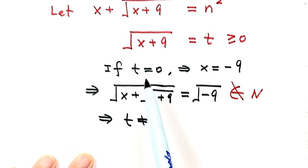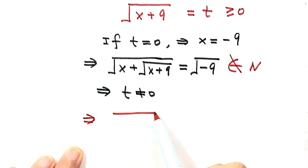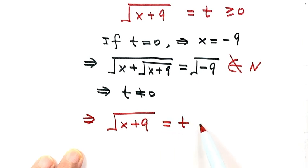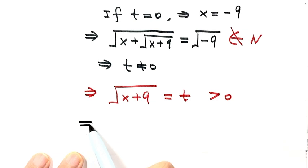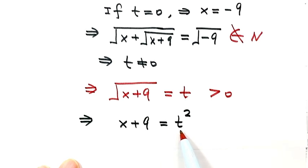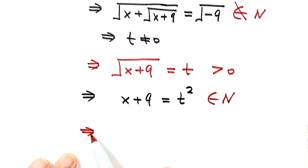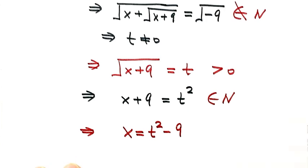So t must be greater than zero, meaning the square root of x plus 9 is greater than zero. Now let's square both sides: x plus 9 equals t squared. Because x is an integer and 9 is an integer, t squared must be an integer. Since t squared is greater than zero, t must be a positive integer. Solving for x gives us x equals t squared minus 9. Let's label this as Result 1.